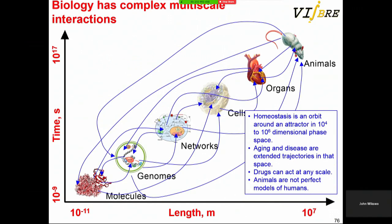The complexity is also that effects at the molecular level can affect the animal, and effects at the animal can affect both the molecule and the gene. I tend to view homeostasis as an orbit in a 10-to-the-4th or million-dimension space, where aging and disease are trajectories in that orbit. Drugs can act at any of the scales, and animals are not perfect models of humans.